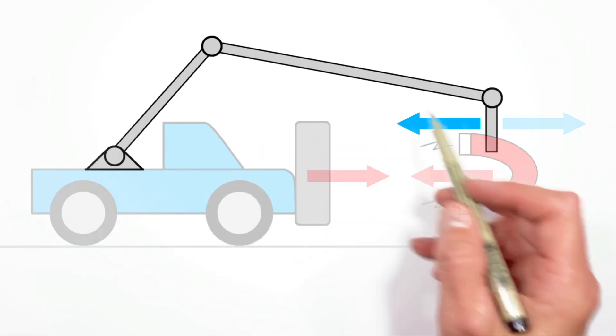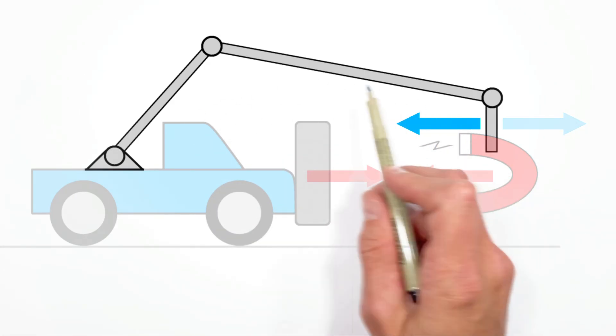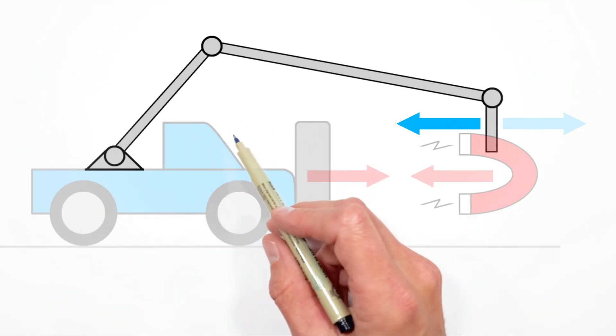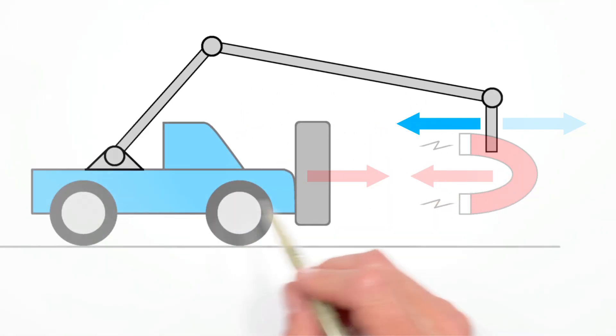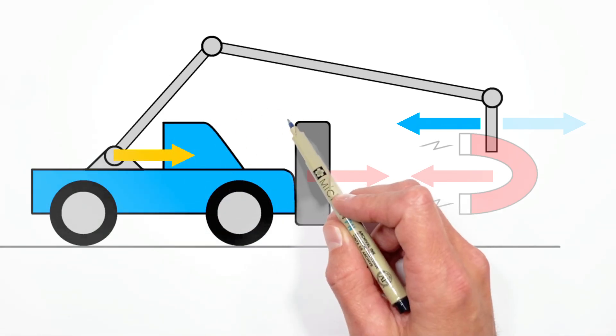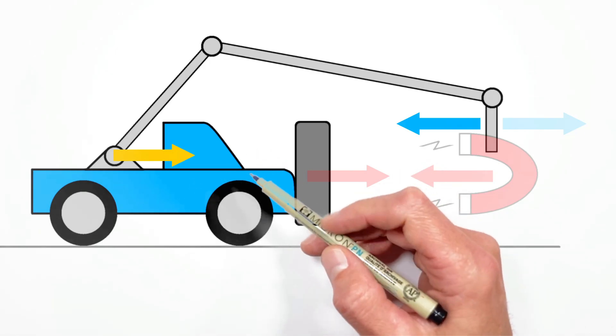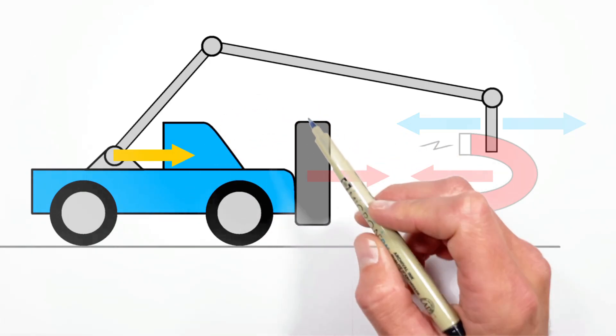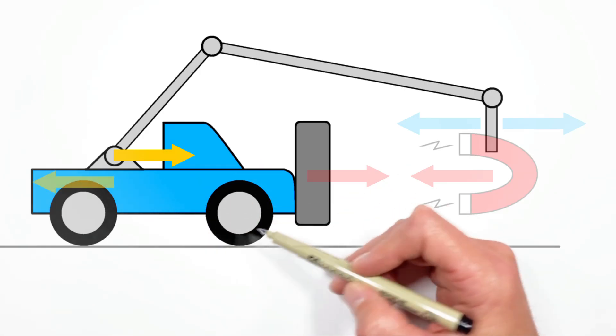Well, we don't want this beam moving backward, so that means something's going to have to push forward on the beam. Well, the only thing that's holding the beam in place is the truck itself. And so, the truck is going to have to push forward on this beam. And again, Newton's Third Law is popping up here. If the truck is pushing forward on the beam, that means the beam is pushing back on the truck.